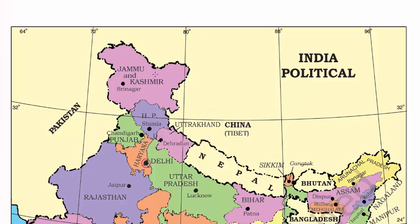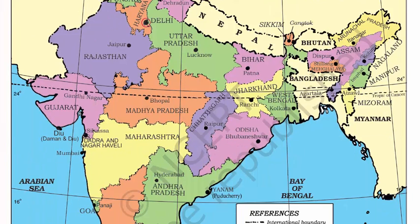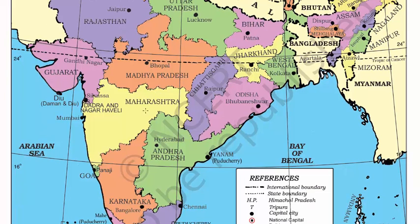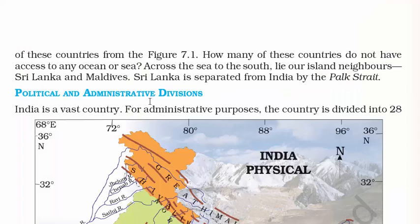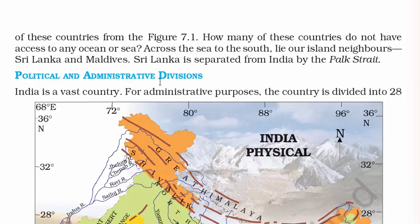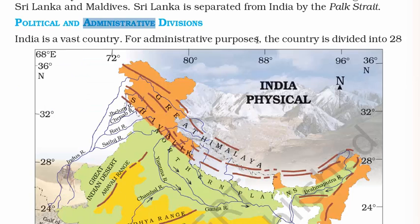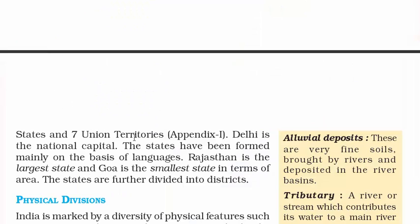On page three, we have a picture of India's political map showing all state boundaries and capital cities. On page four, we read about political and administrative divisions. Administrative divisions are done to make the country functional — without them it would be very difficult to run a huge country like India with 1.25 billion people. For administrative purposes, the country is divided into 28 states and 7 union territories.